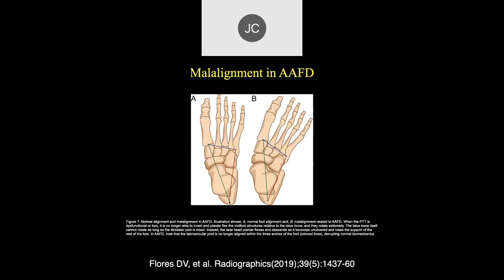What you start getting is not only valgus angulation of the calcaneus, but over time a lateral deviation of the navicular with respect to the talus. If you draw a line through the distal end of the talus, through the mid portion of the navicular and into the medial cuneiform, that's a nice straight line normally. When you start getting valgus angulation of the navicular with respect to the talus, a straight line through the talus goes off into no man's land on the medial side — this is called hind foot valgus.